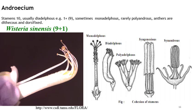The anther is majorly a two-lobed structure, that is dithecous. The position of the filament and anther is such that the filament is attached to the back of the anther and the anther is immovable, as shown in the diagram that illustrates the diadelphous nature of the stamens in the androecium.